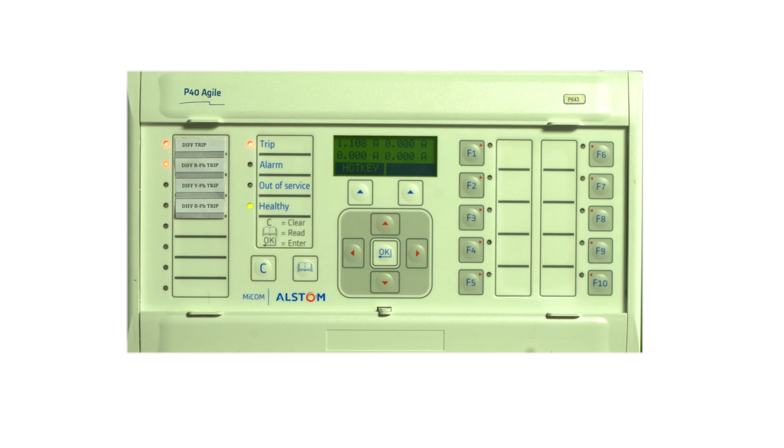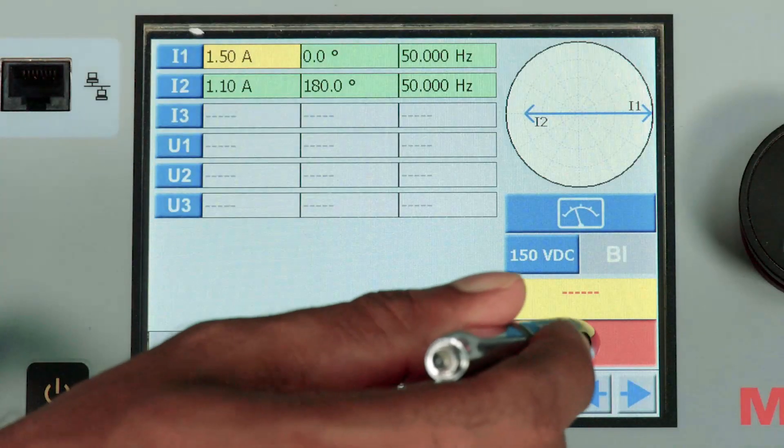Once the relay trips, let's identify what is the differential current. The differential current ID is 0.3 and the corresponding restraint current is 0.996. So let me switch it off.